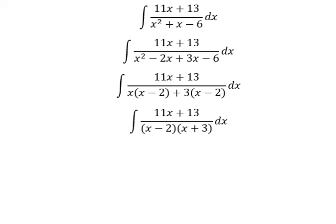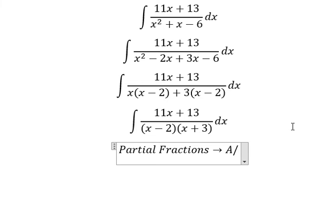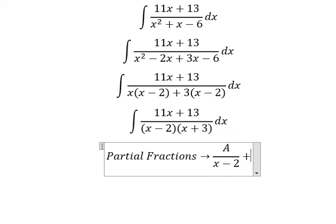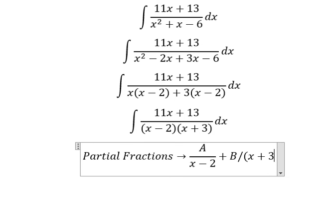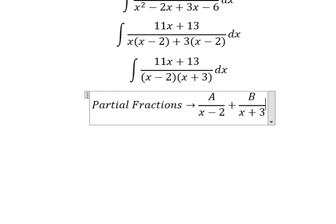Next we use partial fractions. I will put capital A over (x-2) plus capital B over (x+3). Then we find a common denominator.